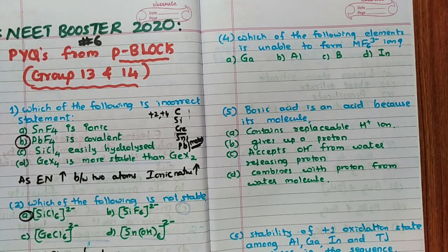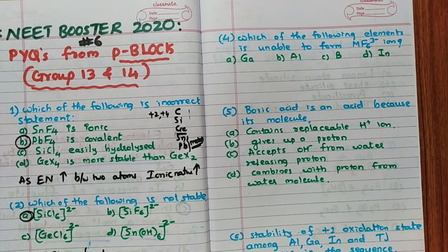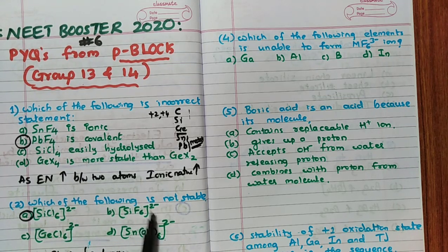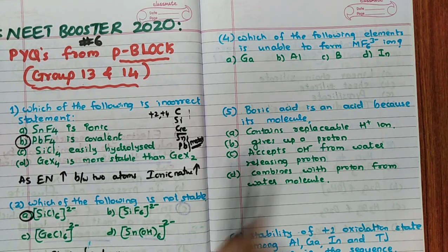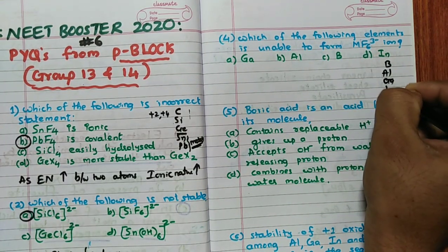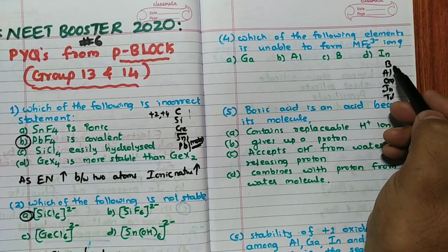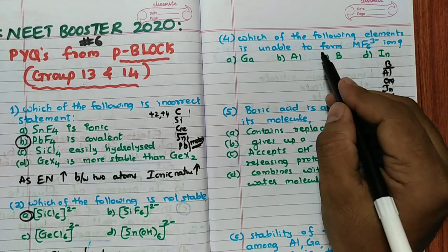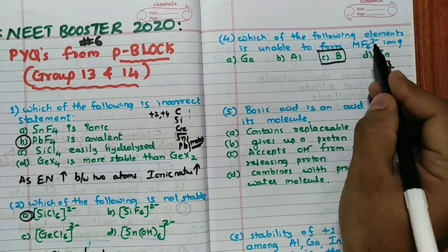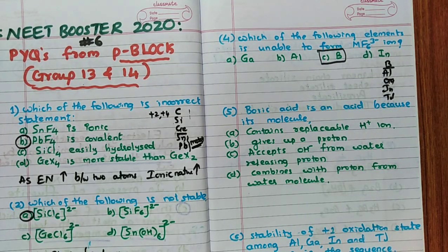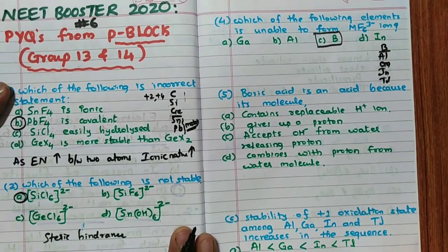The fourth question asks which element is unable to form MF6³⁻. In group 13, the elements are boron, aluminium, gallium, indium, and thallium. Boron has no d-orbital, so it cannot form more than four bonds. The maximum bond number for boron is four, so boron cannot form MF6³⁻. The remaining elements can form six bonds.